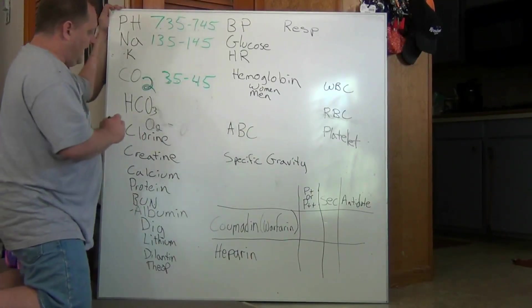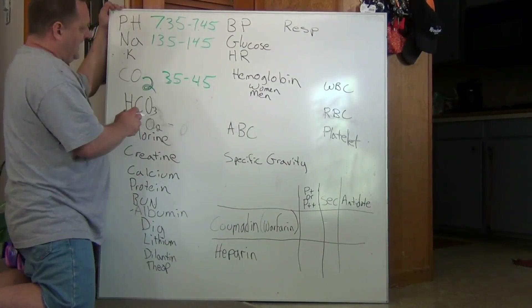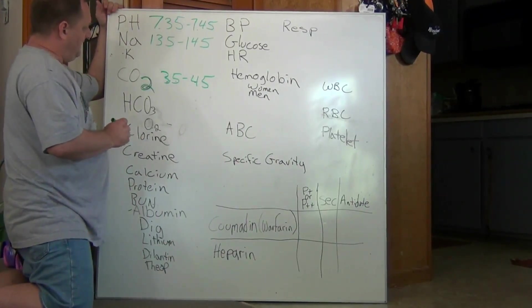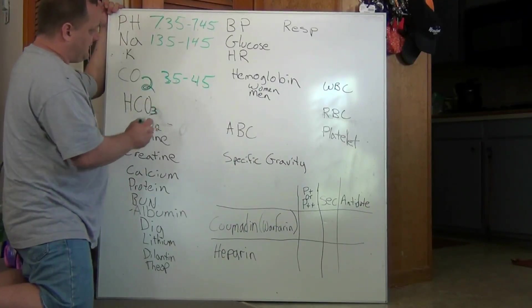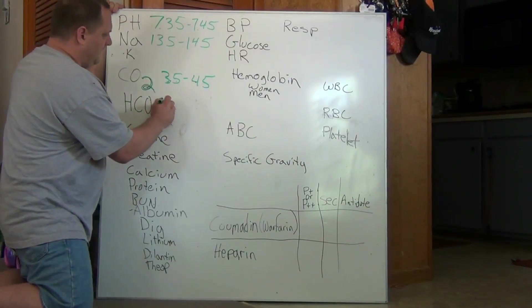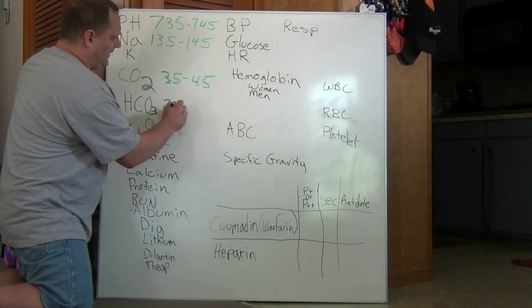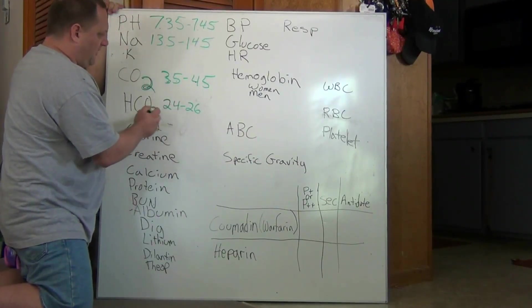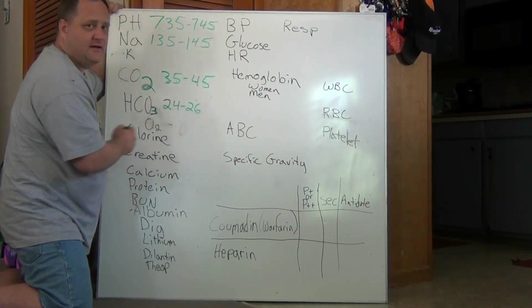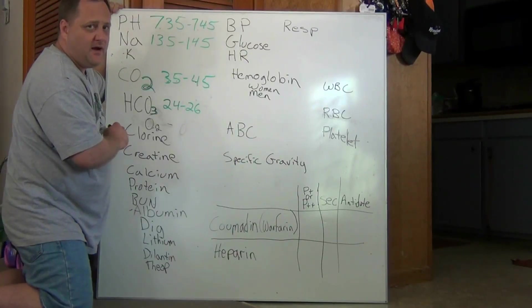We've got CO3 here and the 3 might also give us a clue into what the values will be. The value is 24 to 26. And we can see 2, 3, 4, or 2 times 3 is 6, something along those lines might help us there.